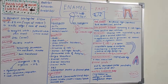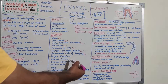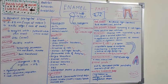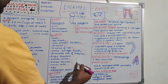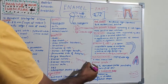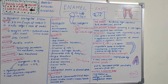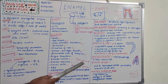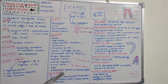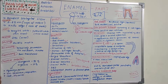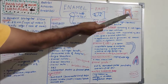Moving on to surface structures: these include enamel cuticle, enamel lamella, enamel tufts, enamel cracks, rod ends, and perikymata. The first surface structure is prismless enamel, which is present in 70% of permanent teeth and all deciduous teeth. It is least over the cusp tip and most commonly found in the cervical area.